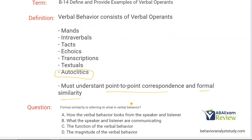So, what is formal similarity referring to in verbal behavior? Point-to-point correspondence means whatever is verbally stated is identical between the speaker and the listener, or whether you're reading a sign word for word. Formal similarity is talking about topography — how the response looks. Written and written, spoken and spoken — those are formally similar. So formal similarity refers to how the verbal behavior looks. Answer A — how the verbal behavior looks from the speaker and listener — yes, we're concerned with the form. B — what they're communicating — that's more point-to-point correspondence. C — function — we do analyze by function, but that's not formal similarity. D — magnitude — not relevant. We're concerned with the form, the topography.